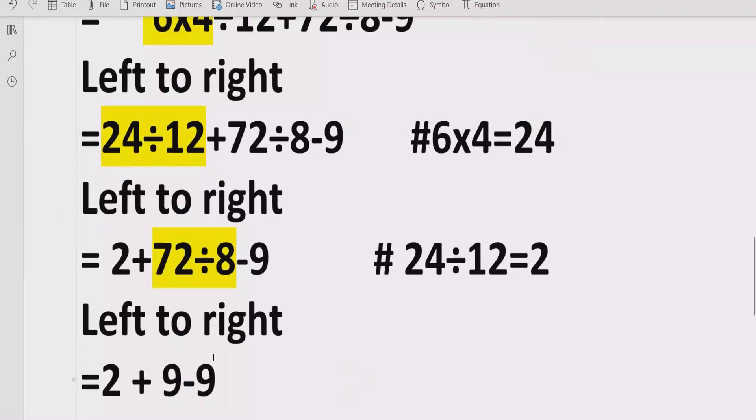And here we will write 72 divided by 8 which is equal to 9.